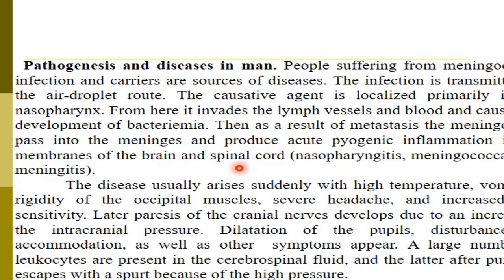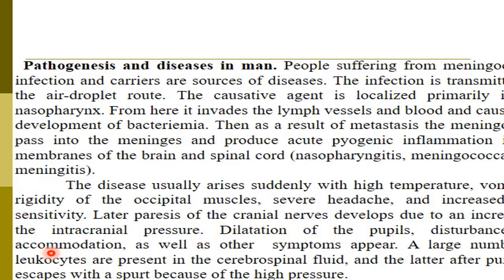Clinical presentations include nasopharyngitis, meningococcal meningitis, and others. The disease usually arrives suddenly with high temperature, especially stiffness in the occipital muscles, severe headache, and increased sensitivity. Later, paresis of the cranial nerves develops due to increased intracranial pressure. Dilation of the pupils, disturbances in accommodation, and other symptoms may appear.